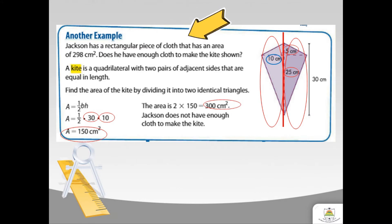Going back to the question: does Jackson have enough cloth to make the kite? The answer is no. Jackson does not have enough cloth to make the kite, because the kite requires 300 squared centimeters but Jackson only has 298 squared centimeters.